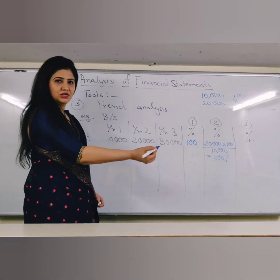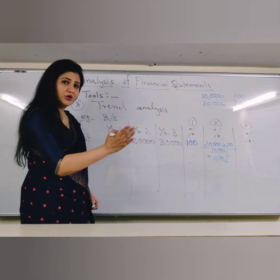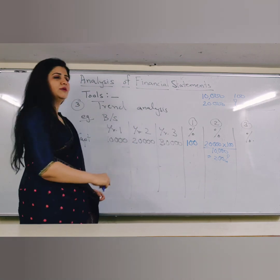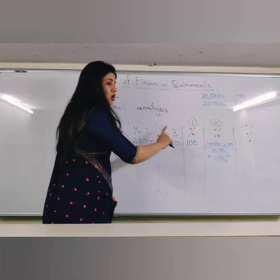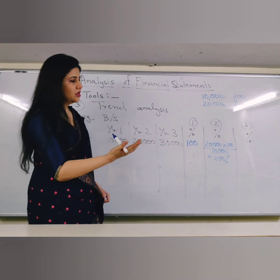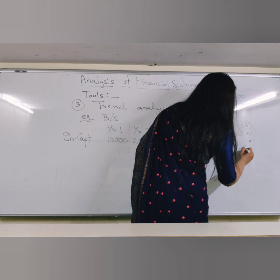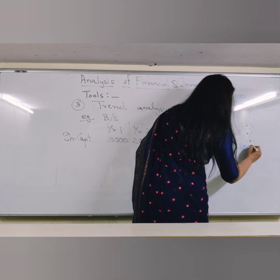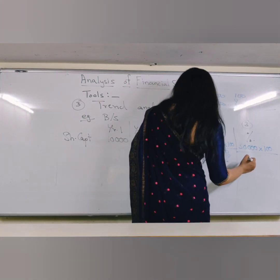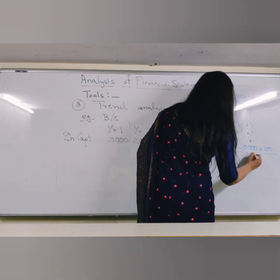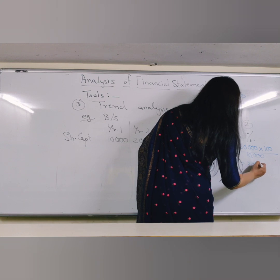Similarly, we will do year 3. Year 3 will again be compared with the first year, because we are doing fixed base. 10,000 is 100%, so how much is 30,000? The simple formula to remember is: the amount of that particular year — 30,000 — multiplied by 100, divided by the first year's amount, the base year's amount — 10,000 — which gives me 300%.